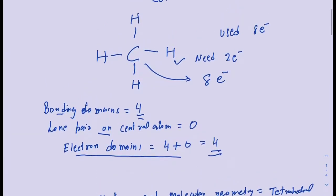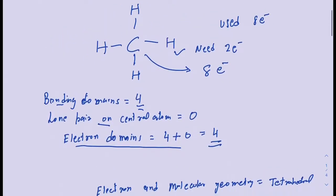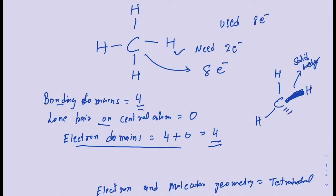Going back to CH4, the Lewis structure was drawn flat with four hydrogens around it, but in the three-dimensional representation, two hydrogens are in the plane, one hydrogen comes out of the page shown with a solid wedge, and one goes back into the page shown with dashed lines. Make sure you know this notation.